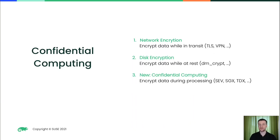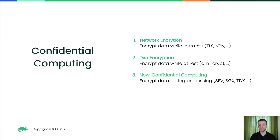The only thing that was missing so far was encrypting your data while it is processed on the CPU, because to process your data you have to decrypt it and process the raw data on the CPU. This is where confidential computing comes into the picture. Several hardware vendors came up with hardware extensions which allow you to encrypt your data while it is processed on the CPU — for example AMD SEV, Intel SGX, Intel TDX, and more from IBM and ARM.